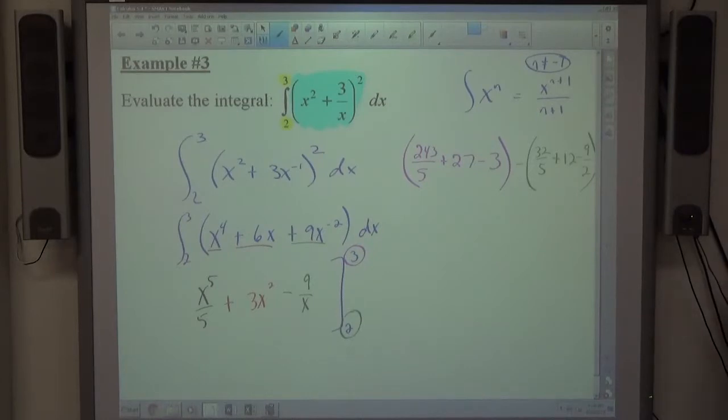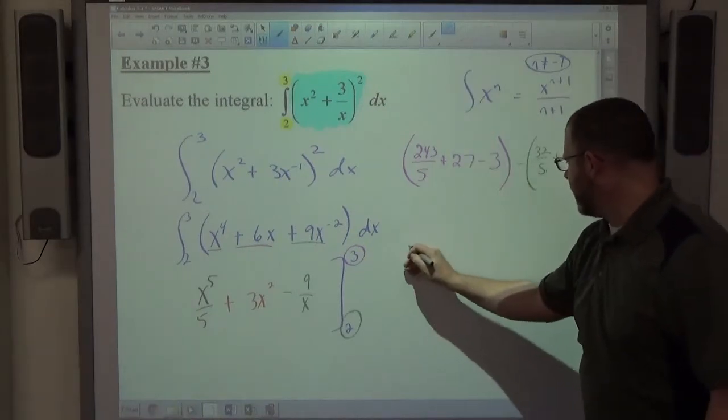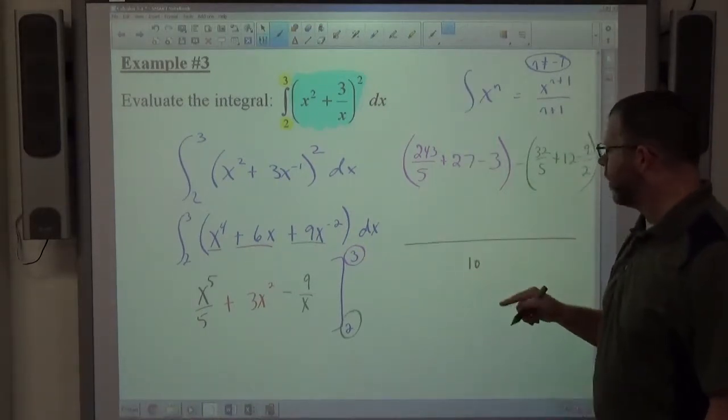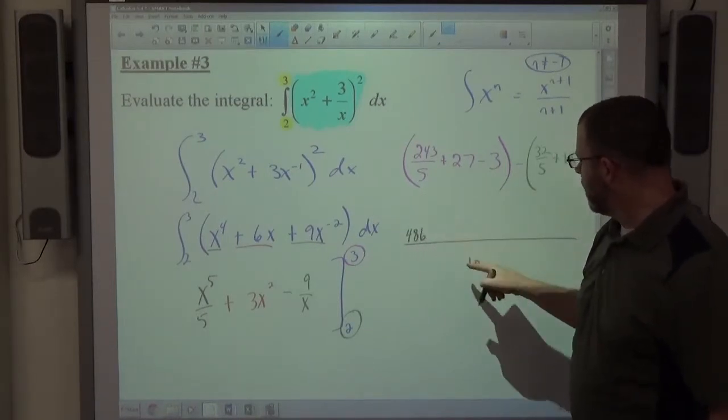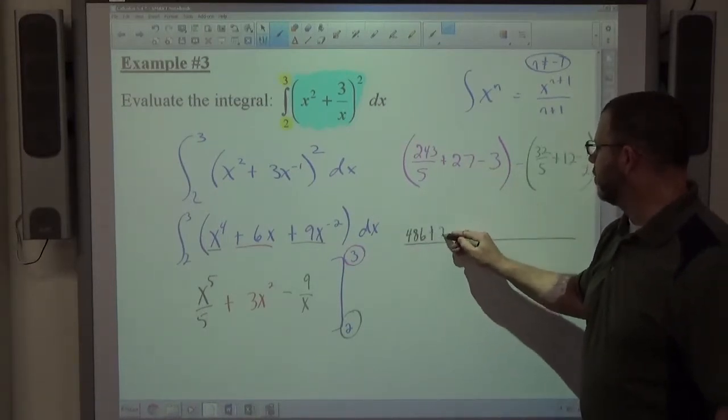So just like that, I get all these terms, just nice little fractions or whole numbers. And then finally, the common denominator of all this stuff is 10. So I'm just going to probably make the common denominator 10 right now, and do whatever is necessary. So times 2 times 2, that would be 486, times 10 times 10 is plus 270.